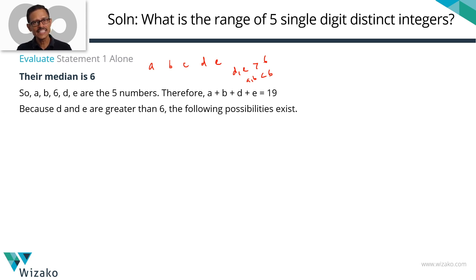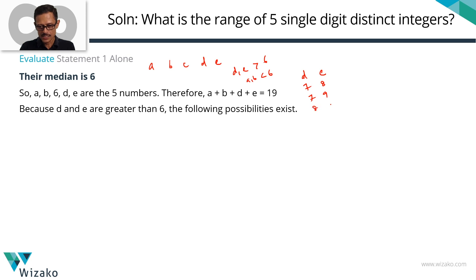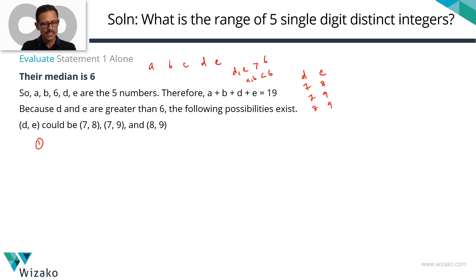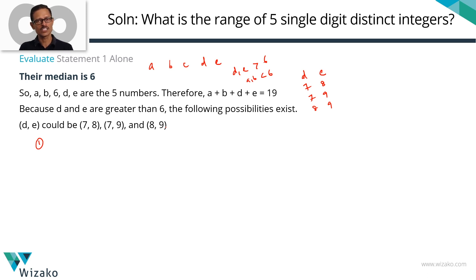Since d and e must be greater than 6, they can take three possible value pairs: 7 and 8, 7 and 9, or 8 and 9. For each possibility, we check what values a and b can take. If d = 7 and e = 8, then a + b = 4, giving a = 1 and b = 3. The range is 8 − 1 = 7.